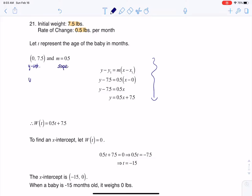Which means I could have gone right into y equals mx plus b form. I could have said y was half x plus 7.5, like that.